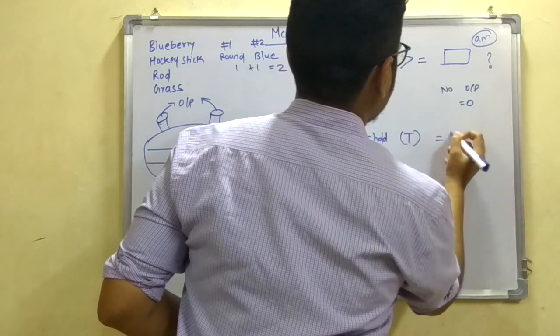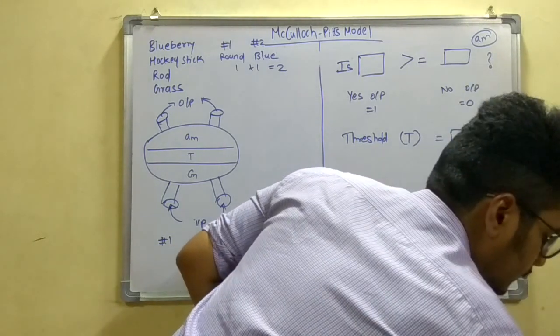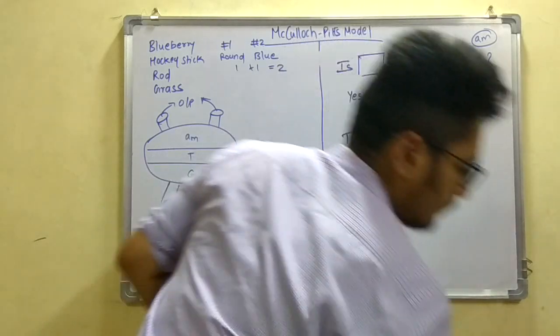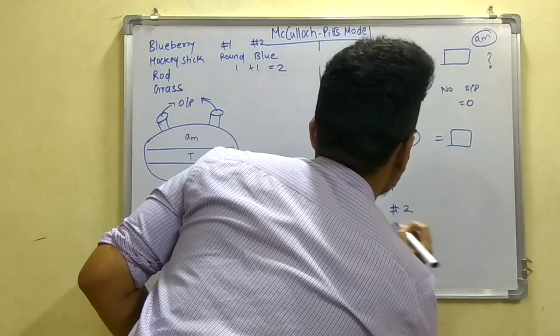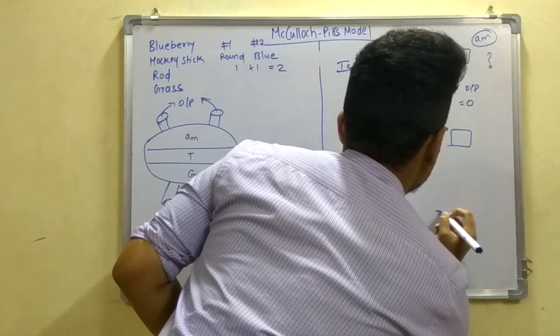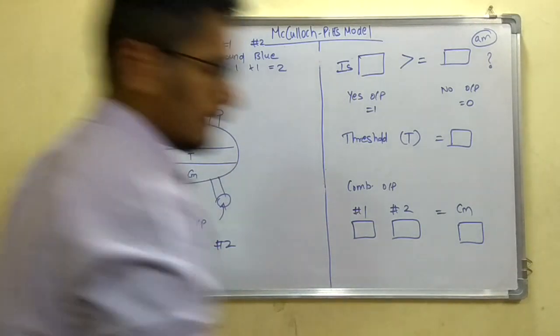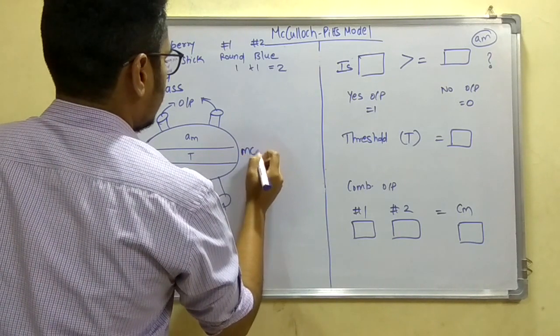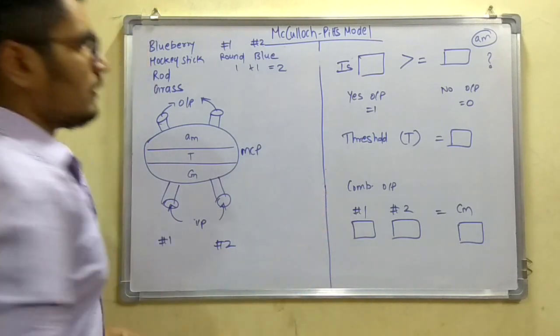It has two outputs - if it is yes then the output will glow as one, or if it is no then the output will glow as zero. This is the primary level. Next we have the threshold, that is T. And T we take as some value. And we have these inputs, that is the combined output, for number one, that is the shape, and number two, that is the color or the texture. And we get the output to this, that is the CM. So let's get started. This is the MCP, that is the McCulloch-Pitt model.